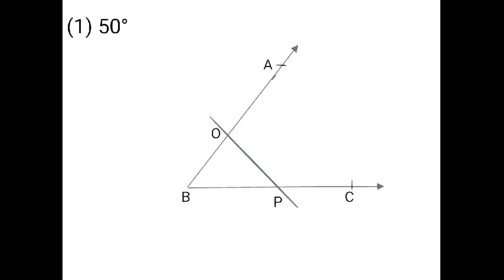Now draw the arc from point O. First you have to keep your rounder on point O and draw the arc like this. Now you have to keep your rounder on point B and draw the other arc. After that, you have to join the ray from point B — the position where I cut these two arcs from point O and point P. The arcs which I cut from point O and point P, you can give any name to the point. I named it point M. The 50 degree angle is shown here. Finally, you have to mark it on the angle.